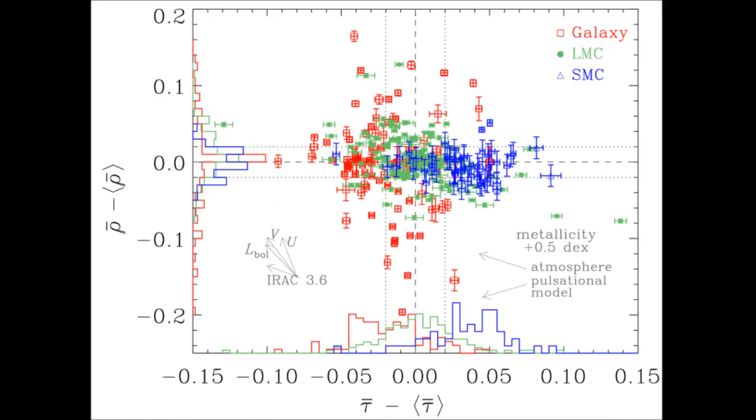This figure shows the residuals with respect to the mean relations of the temperature and the radius for Cepheids in the Galaxy, LMC and SMC. We see a clear trend that the galactic Cepheids are generally cooler than the LMC Cepheids and the SMC Cepheids are generally hotter. The simplest explanation of this pattern is the effect of composition.